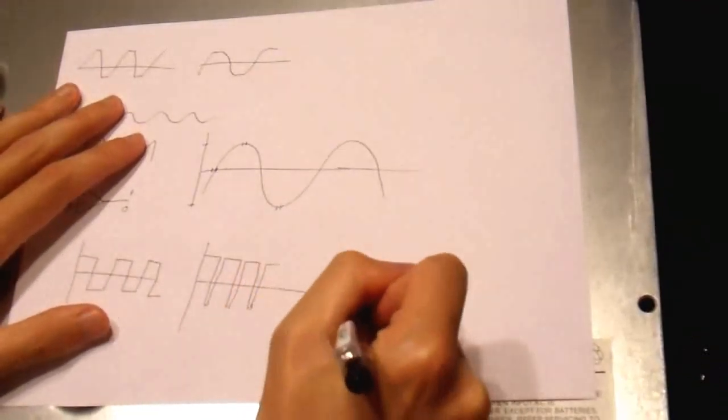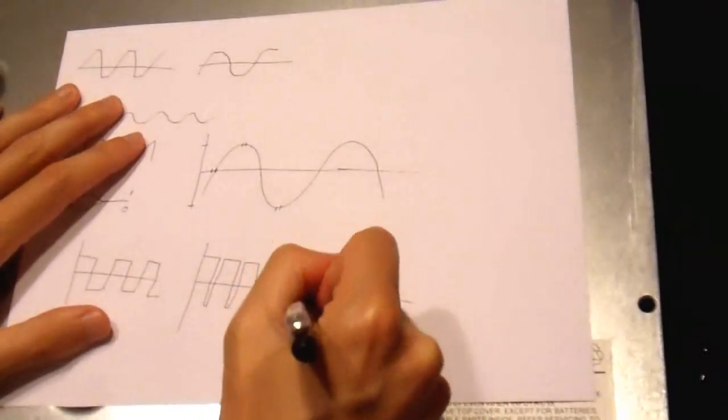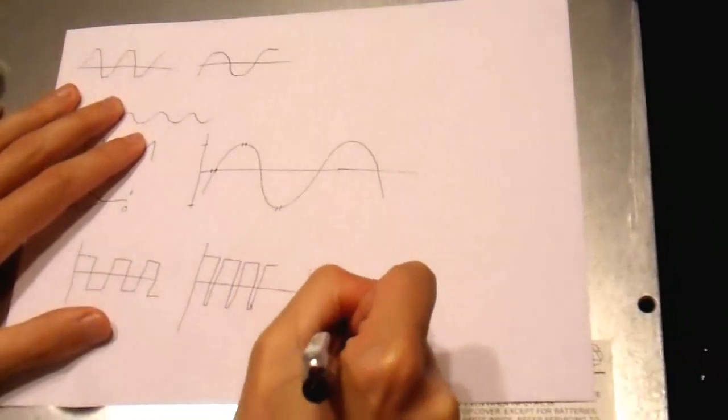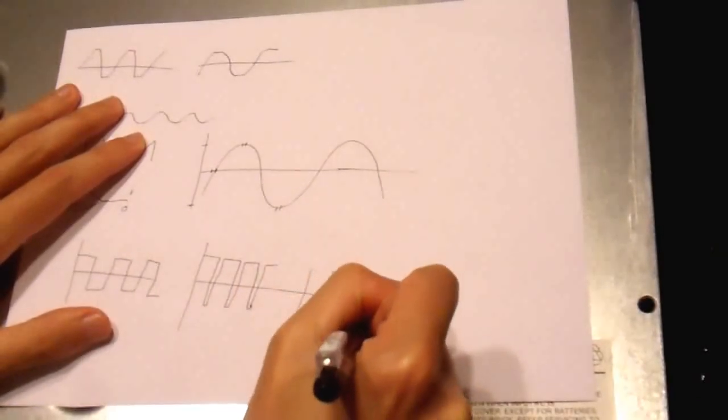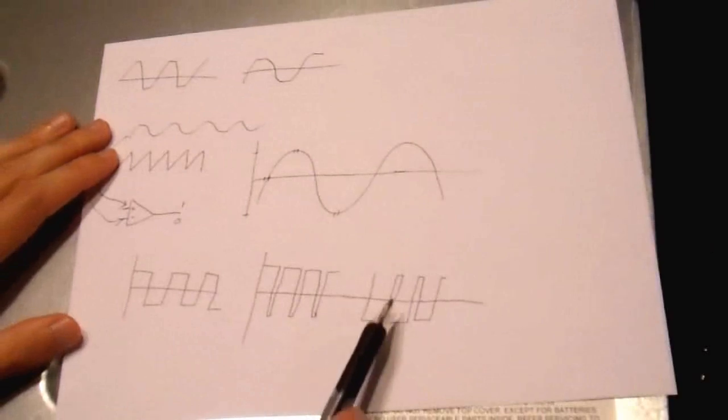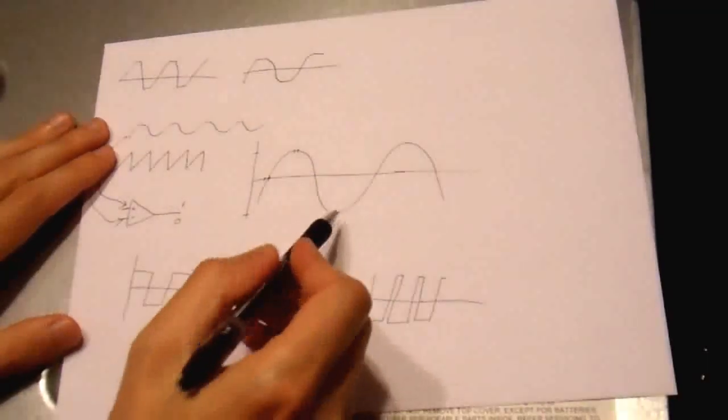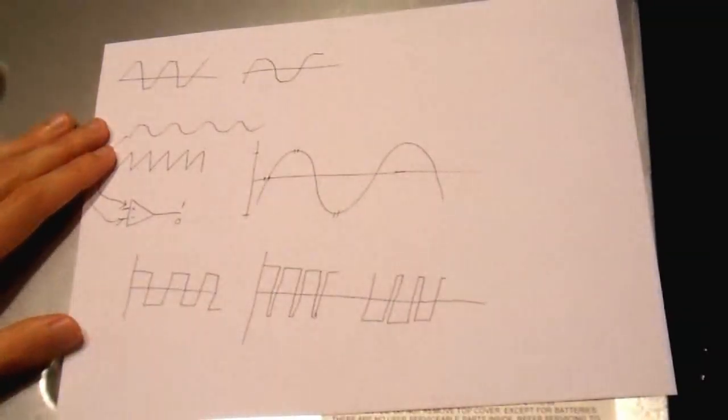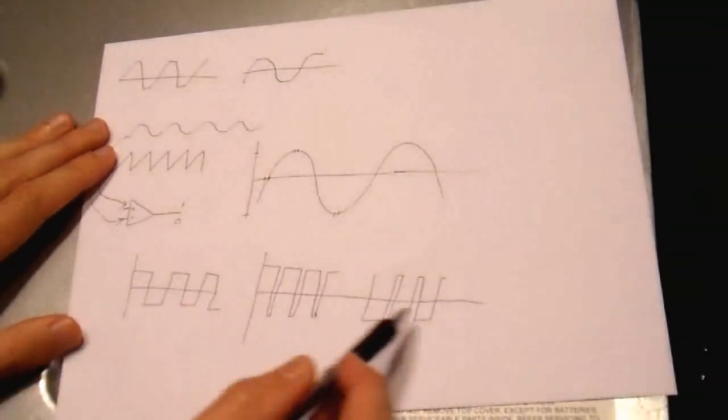If you take a little tiny segment down here, at the bottom, you end up with something that looks like this. Just basically turn that one upside down. It's negative far more than it is positive, so you have a high negative voltage. And it just does this very rapidly.